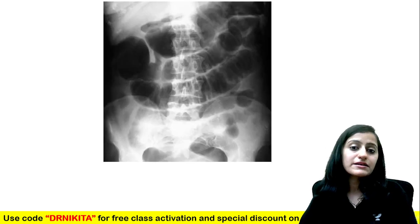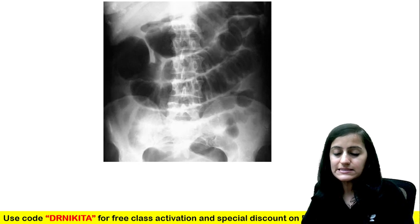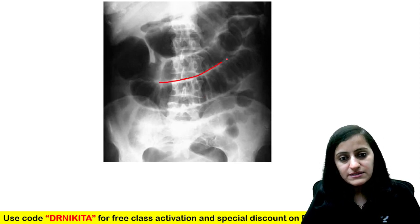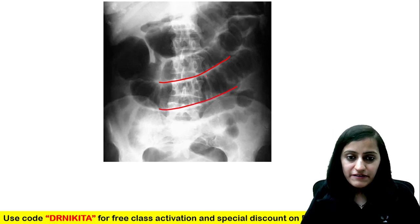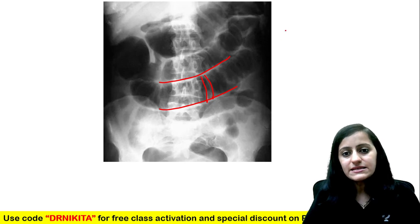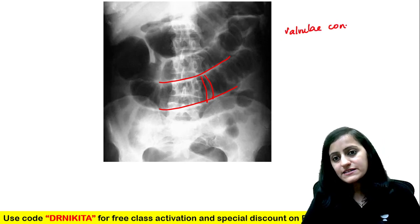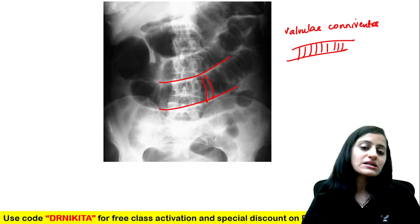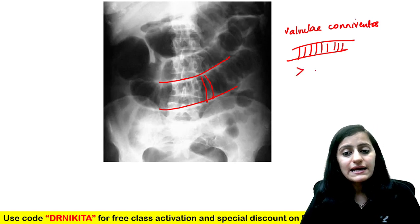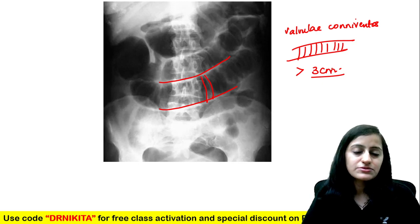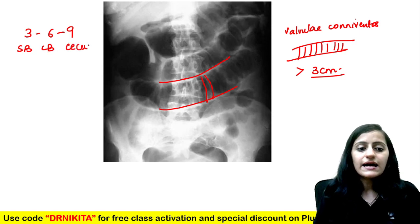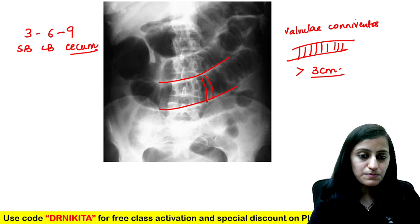Starting with the images, the most important in abdominal radiograph — something which was asked in recent NEET-PG as well — is identifying first the bowel loops, whether it's a small bowel loop or a large bowel loop. This is a dilated small bowel loop — basically small bowel obstruction — where we see dilated bowel loops with complete rings called valvulae conniventes. We call the small bowel dilated when it is more than 3 centimeters. We have the 3-6-9 rule: 3 centimeters for the small bowel, 6 centimeters for the large bowel, and 9 centimeters for the cecum, which is the most distensible part in the GI tract.